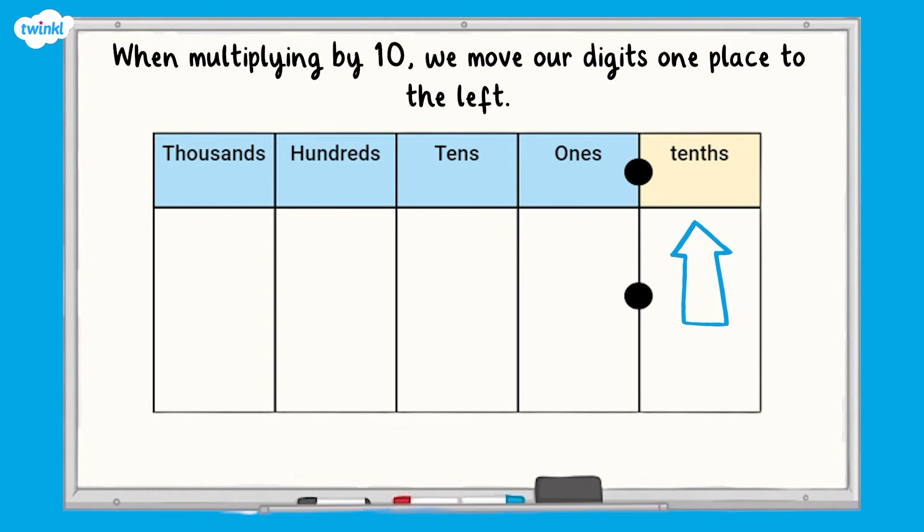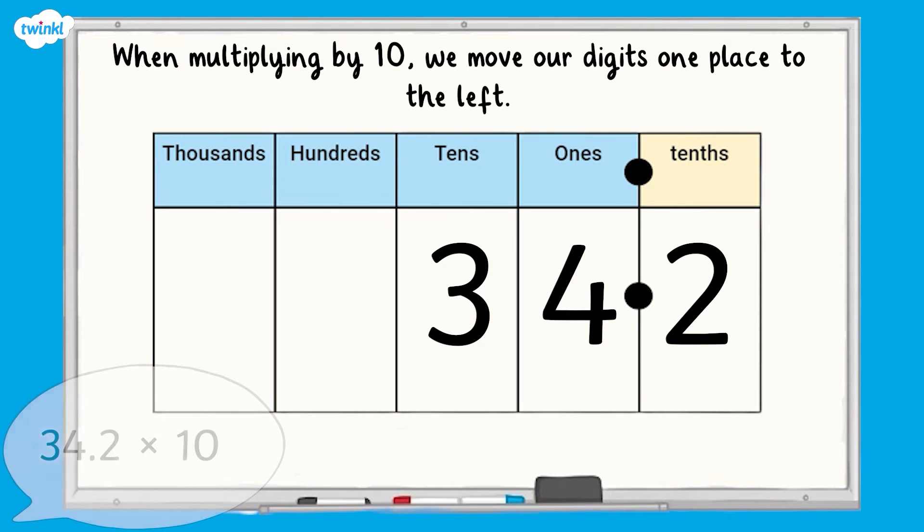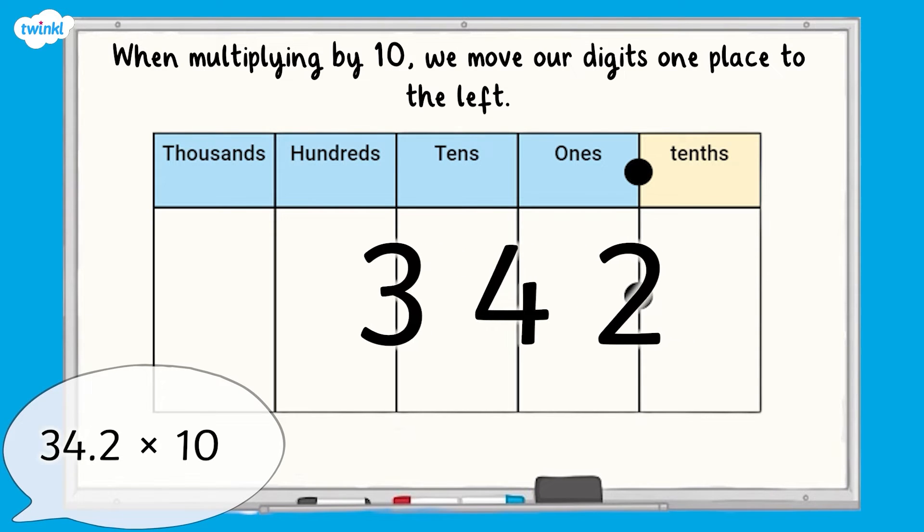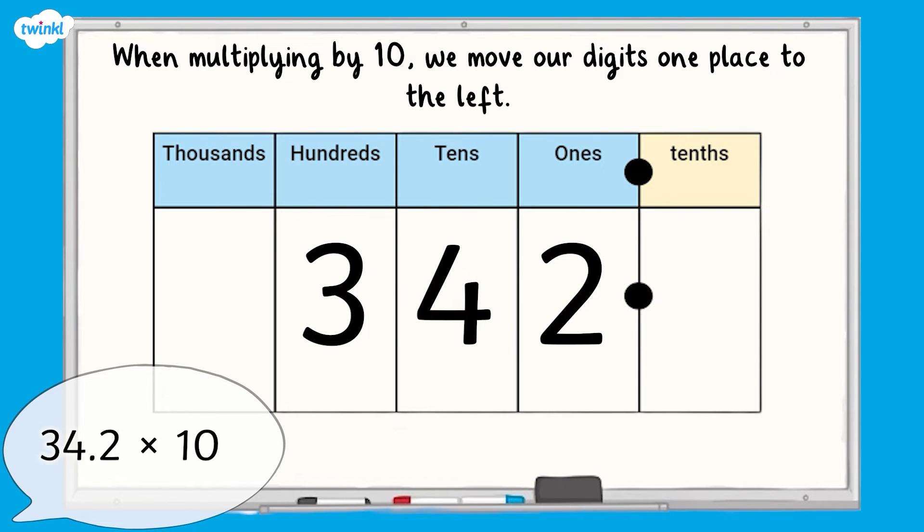Here is the number 34.2 on our place value chart. We are going to multiply our number by 10. We already know that when multiplying by 10, we move our digits one place to the left. As you can see, 34.2 multiplied by 10 is 342.